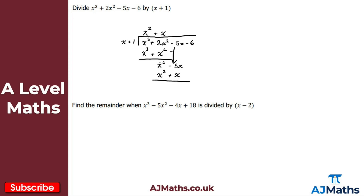We've got two columns matching again so we subtract: x squared minus x squared is zero, and minus 5x minus x gives minus 6x. We then bring down the final term, minus 6, so we now have minus 6x minus 6.